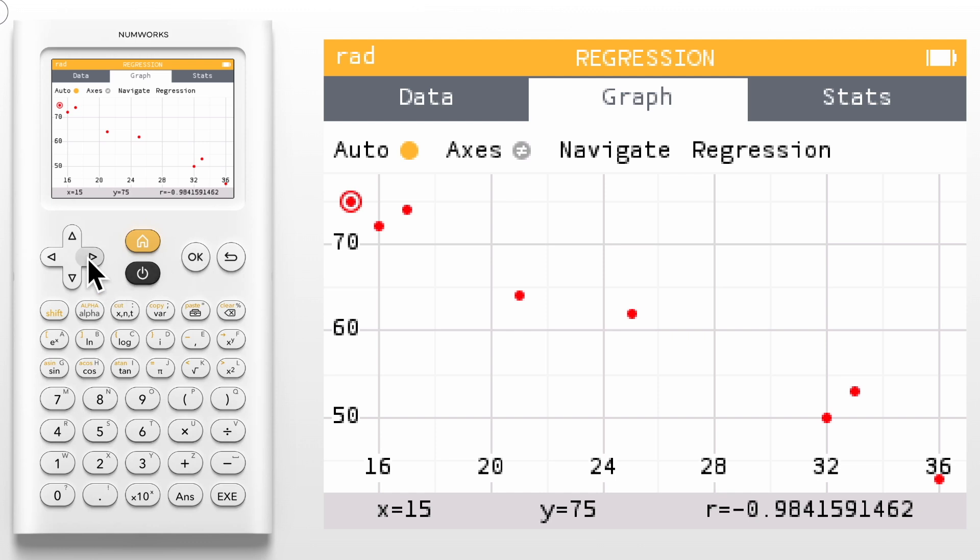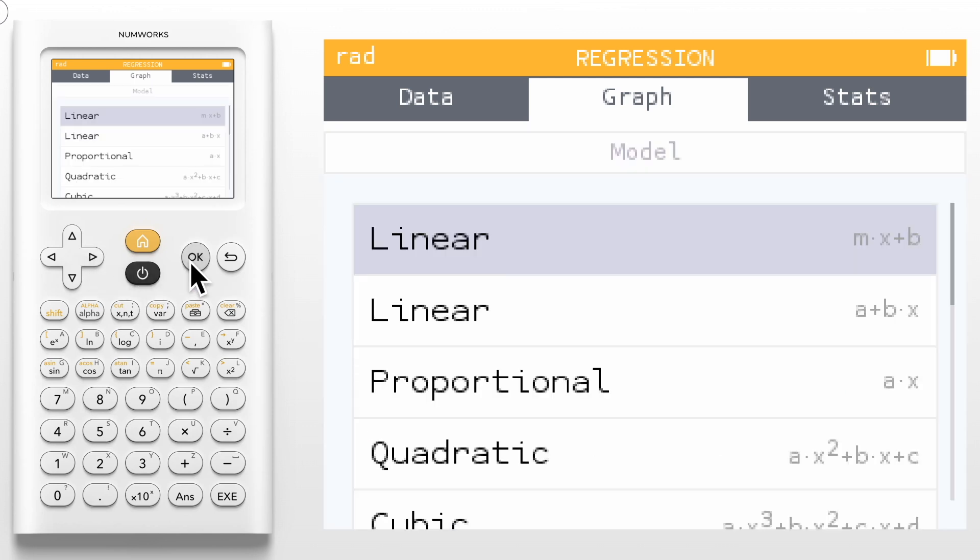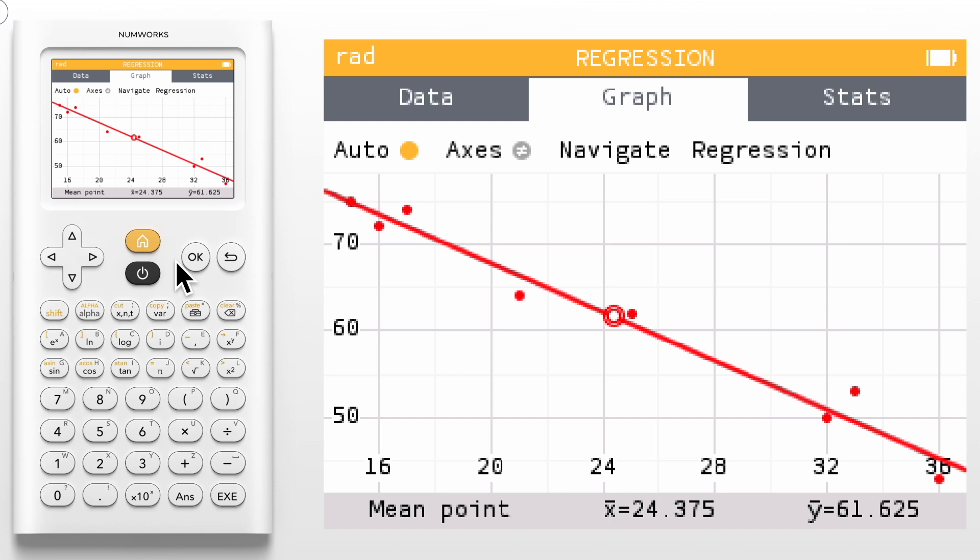Once your data is entered navigate to the graph tab to view the scatter plot. You can use the left and right arrows to highlight each data point and see its values at the bottom banner. You'll see the correlation coefficient R in the bottom right hand corner. To add a regression model simply click OK while on a data point. Both forms of the linear model are available. I'll select a plus bx. This returns us to the scatter plot where a line of best fit is now graphed.